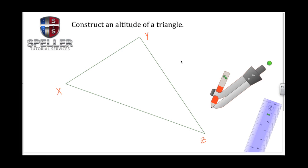Welcome back to Speller Tutorial Services. In today's video, we're going to construct an altitude for a triangle. Know that a triangle has three different altitudes; we're only going to construct one. An altitude is a segment that extends from one of the vertices of the triangle to the opposite side, creating a 90-degree angle or perpendicular angle when it reaches that opposite side.